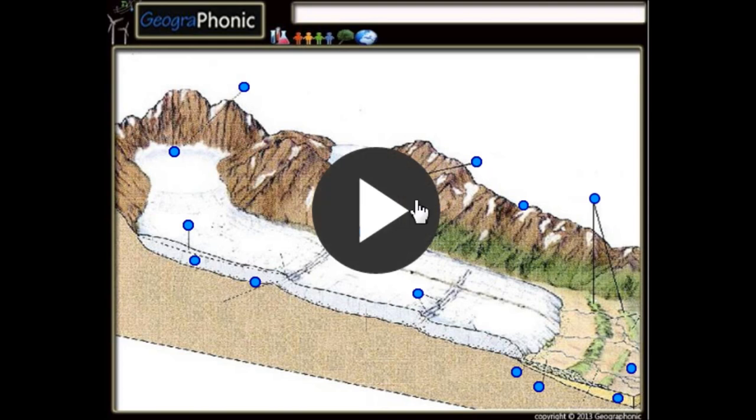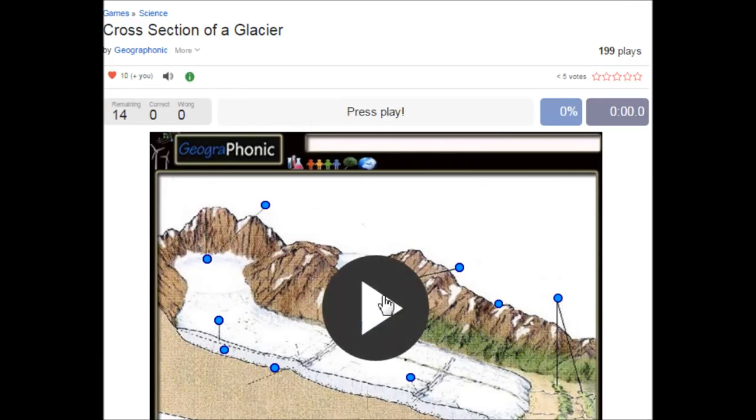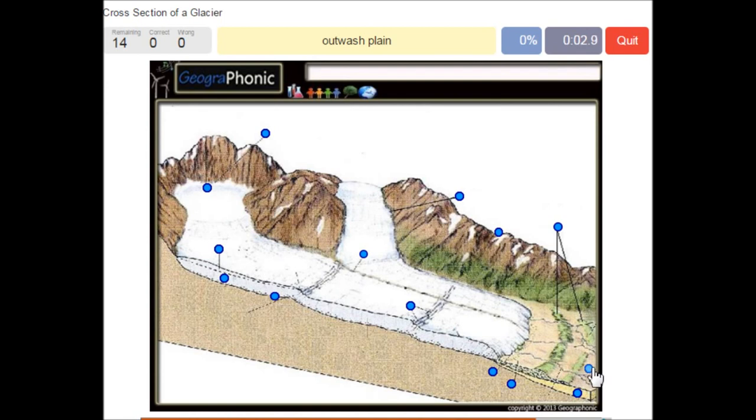The features of a glacier you have to recognize. The outwash plane is what we see here. Crevasses is what we see here.